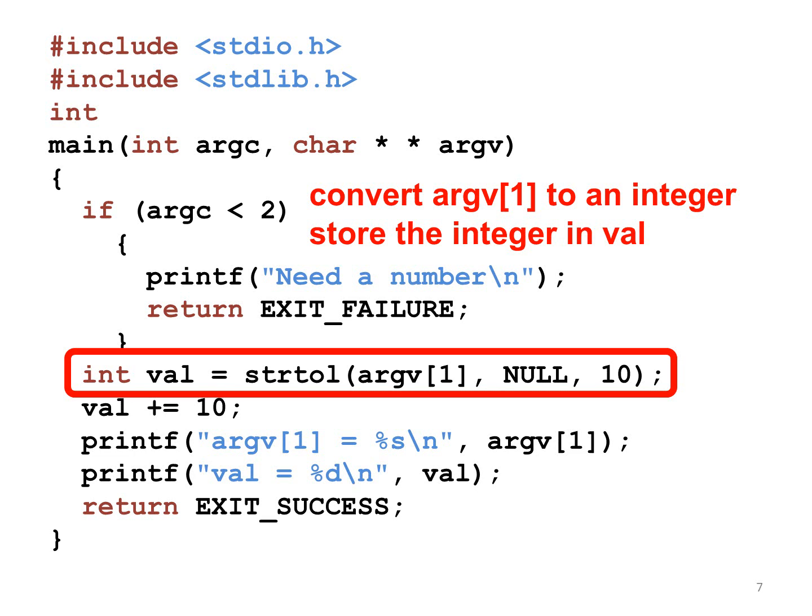strtol is a function that converts a string to a long integer. strtol needs three arguments. The first is a string. The second is an address to store the location where conversion stops. In this example, I give NULL to indicate that I do not care about the location. The third argument is the base. In this example, I use 10 to convert the string to a decimal number.